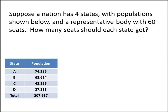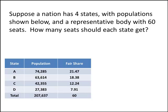If you haven't watched the introduction video, you should click on the link here and watch that now. As we discussed in that video, we can compute the fair shares, and the fair shares add up to the 60 seats that we're looking for. But the problem is that those fair shares are decimals, and the number of seats assigned to each state must be a whole number.